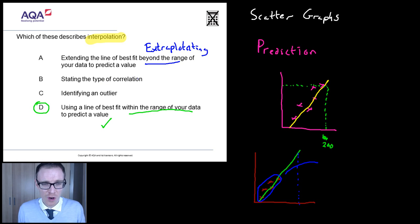B. Stating the type of correlation. Well, that's just kind of describing the trend. Is it positive? Is it negative? Is it no correlation? And identifying an outlier. It's probably worth just having a quick look at this. What's an outlier?